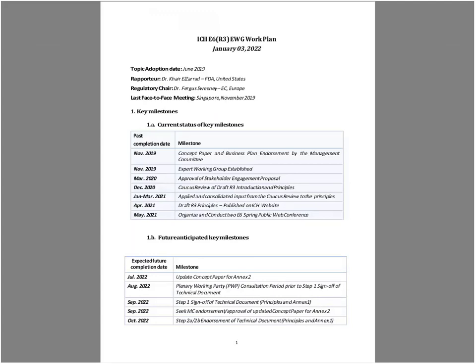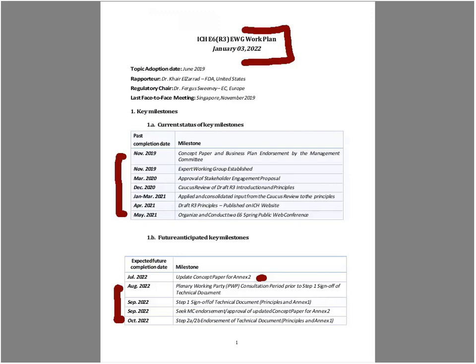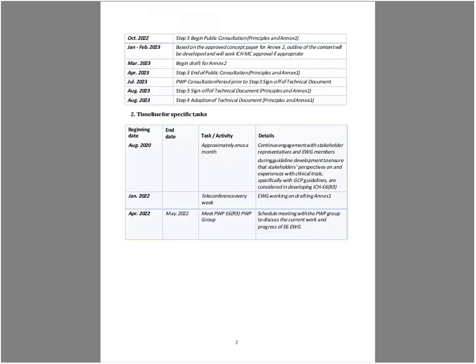We'll talk about the timelines as well, because one of the most important things is: what are we talking about, why are we here, how do we do it, and when are we responsible for this? You have this work plan document as of early this year — another reference showing future anticipated milestones. We're expecting updates for Annex 2. These are things that are still coming, and as far as ICH-GCP-E6 Revision 3, it is still a work in progress. You have this for reference in terms of expectations for adoption and sign-off when it is formalized.